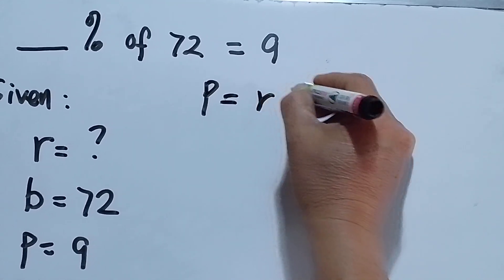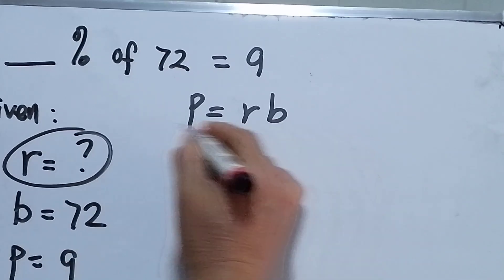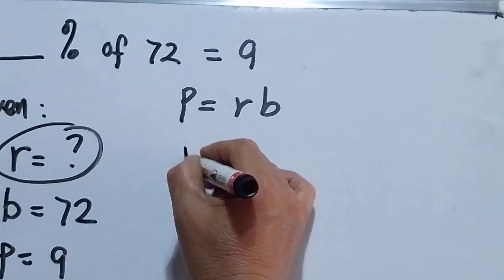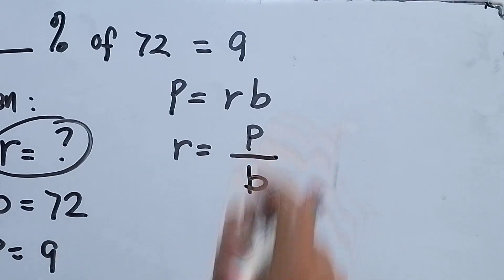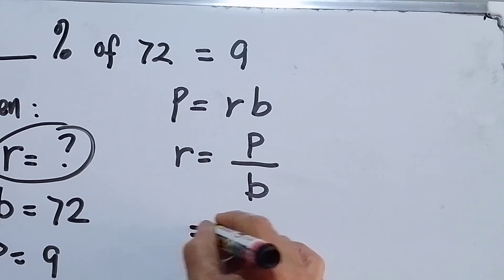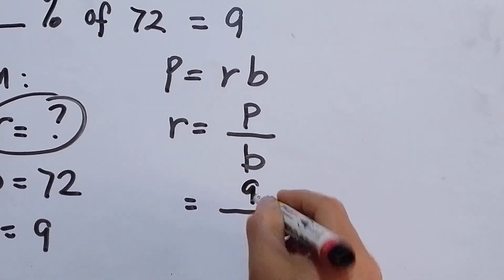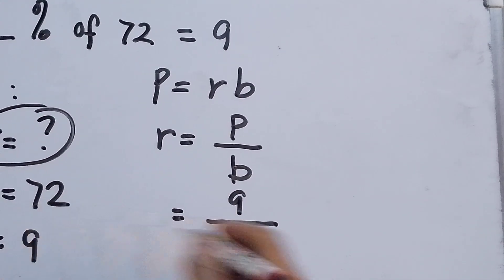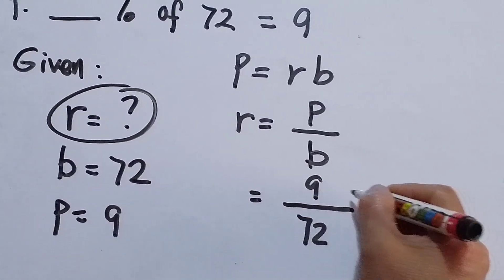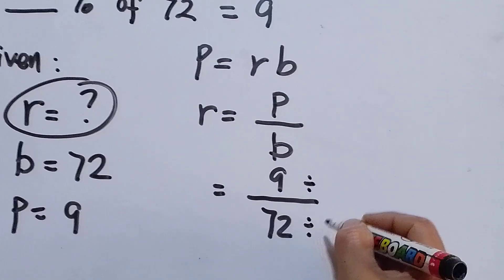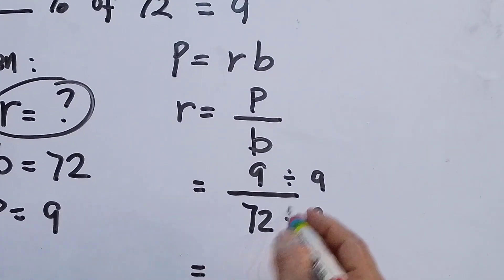Since R is unknown, we rearrange the formula: R equals P over B. We substitute P equals 9 and B equals 72. Since we have a fraction, we need to reduce it to lowest terms by dividing by 9.